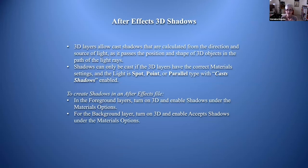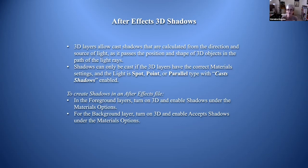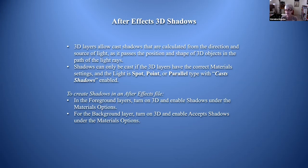3D layers allow cast shadows calculated from the direction of the light source, passing through the position and shape of 3D objects in the light path. 2D objects will not cast or accept shadows. Shadows can only be cast if 3D layers have correct materials settings, the light is a spotlight, point, or parallel type with cast shadows enabled. In foreground layers enable 'cast shadows' under materials options; in background layers enable 'accepts shadows.' You can have an effect that calculates a shadow, but it's not the same as a true cast shadow.